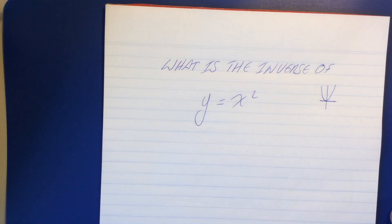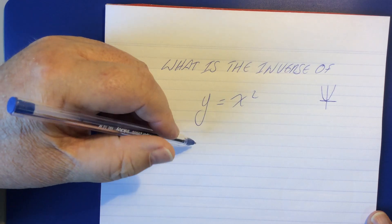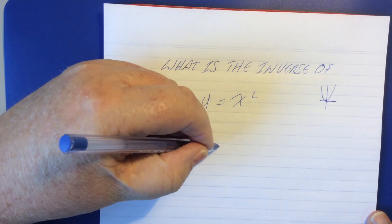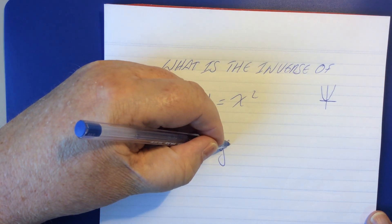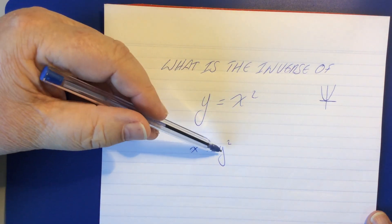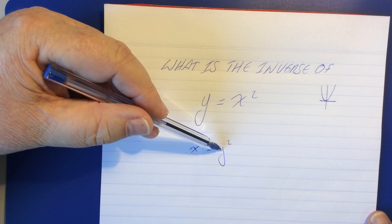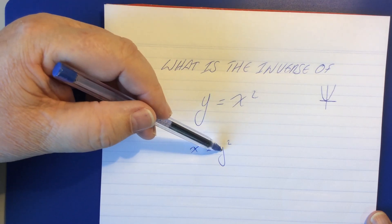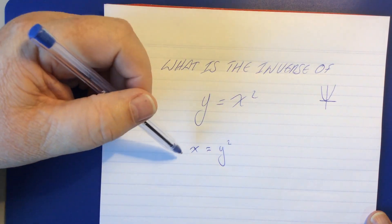Let's do it the traditional way, which is that we swap x and y. And then we make y the subject, which is we make y equal whatever this comes to.